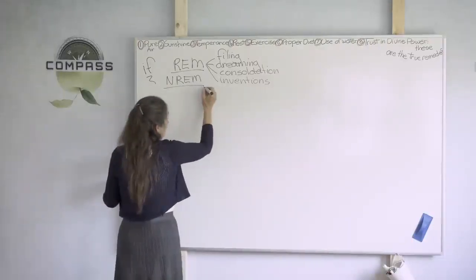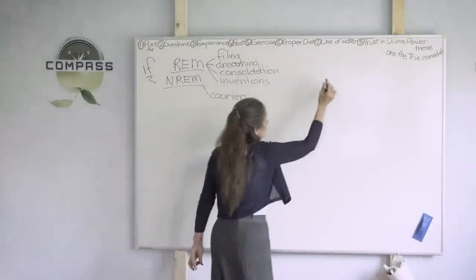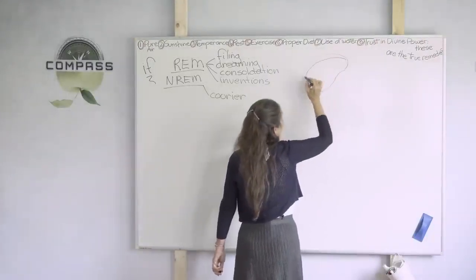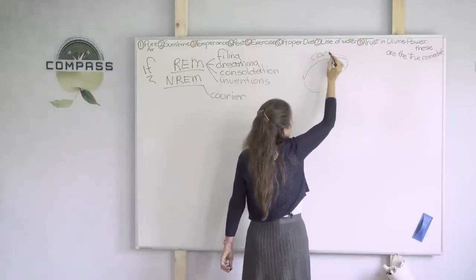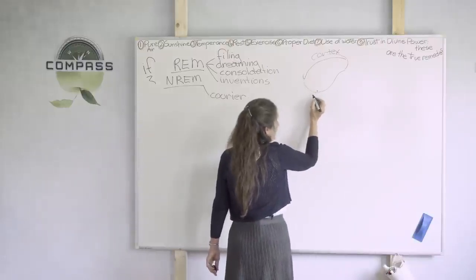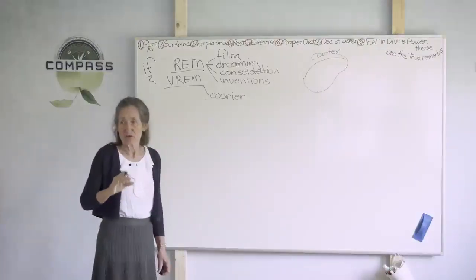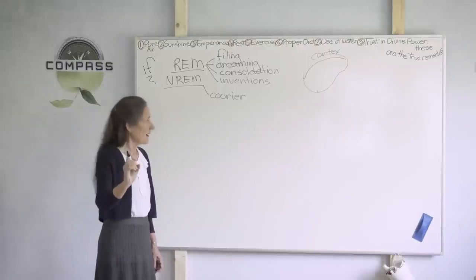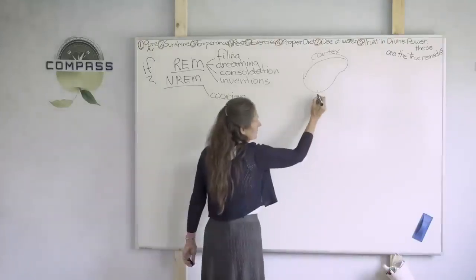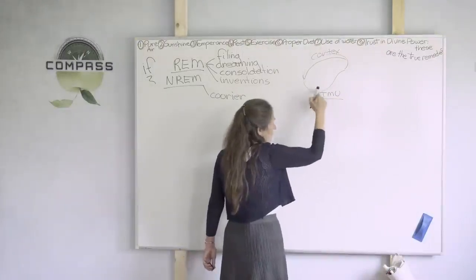V tej fazi pride do inovacij. Kaj se dogaja v fazi, ko ni REM faza? V ne-REM fazi pride do porabe sistema kurirja. Kaj je ta sistem kurirstva? Moramo si pogledati možgane, da bi to razumeli. Tukaj so možgani strani. Zgornji del možganov se imenuje korteks. In približno tukaj, nekaj na spodnjem delu možganov, pa je hipokampus. Hipokampus je naš tam imamo naš kratkoročni spomin.